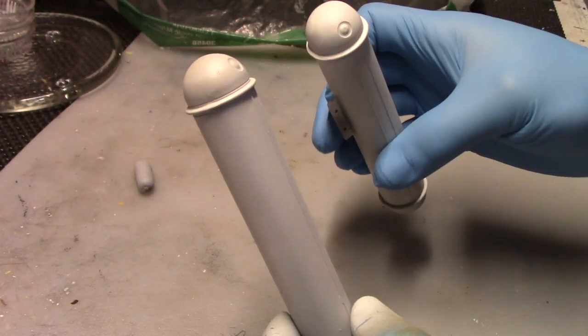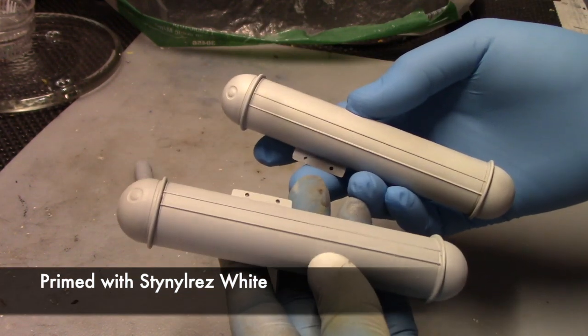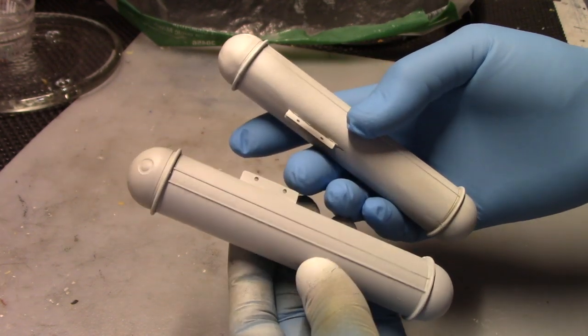All right. So here are the two cylinders. I first primed them gray, but I decided to prime them over with white. I think that would help with the yellow. So let's proceed with the yellow paint.